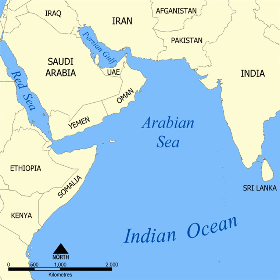== Terminology == Ocean: the four to seven largest named bodies of water in the World Ocean, all of which have 'ocean' in the name. See borders of the oceans for details.